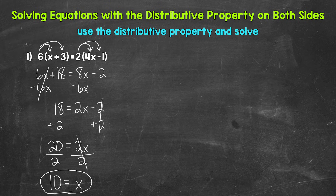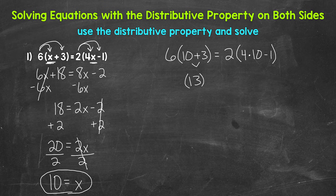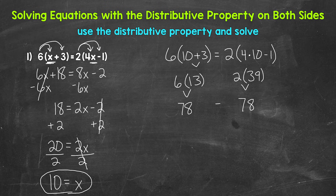That's our solution. Let's check by plugging 10 in for x. On the left side, 10 + 3 = 13, and 6 times 13 = 78. On the right side, 4 times 10 = 40, minus 1 = 39, and 2 times 39 = 78. Both sides equal 78, so we are correct — x = 10.